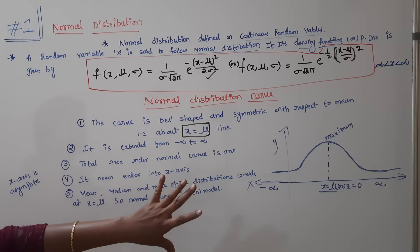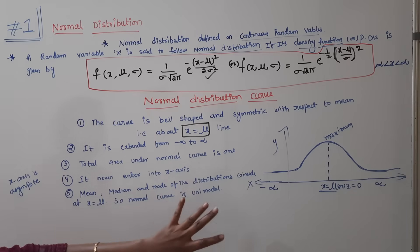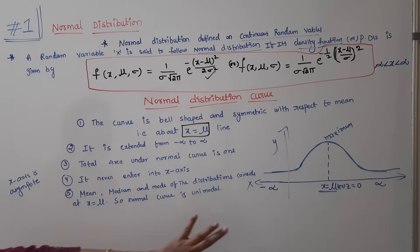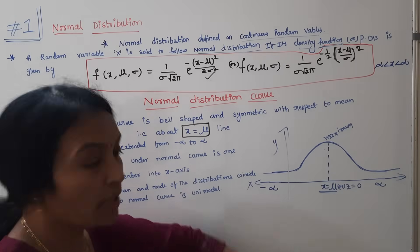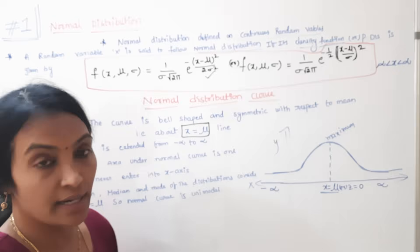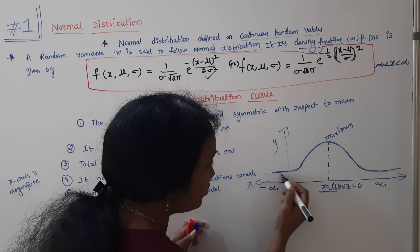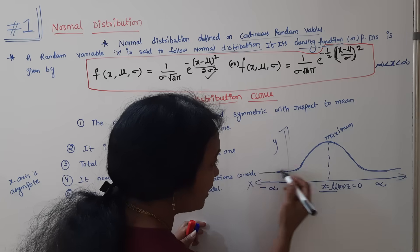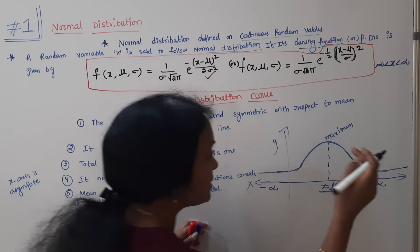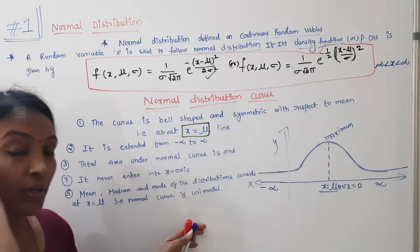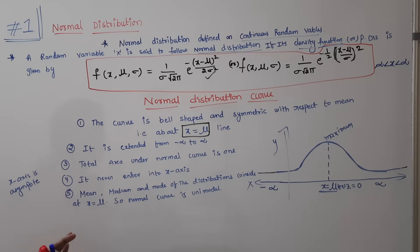Another property is that the x-axis acts as an asymptote to the curve. This means the curve never actually touches or enters the x-axis — it only approaches it. So the x-axis is an asymptote.